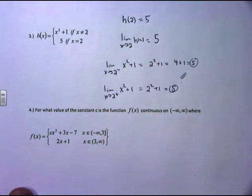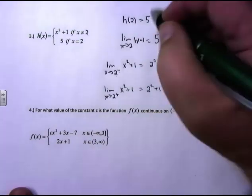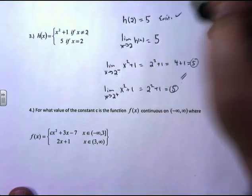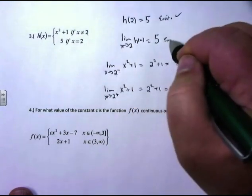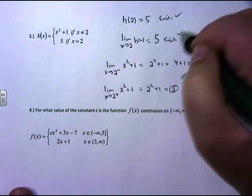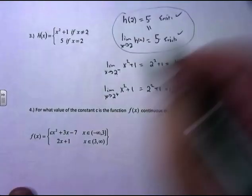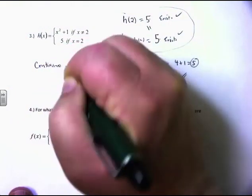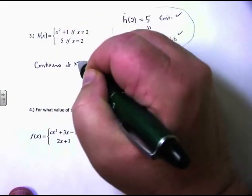For continuity: h of 2 exists and equals 5 — check. The limit as x approaches 2 of h of x exists and equals 5 — check. And they are equal to each other, 5 equals 5 — check. All three conditions are satisfied, so this piecewise function is actually continuous everywhere.